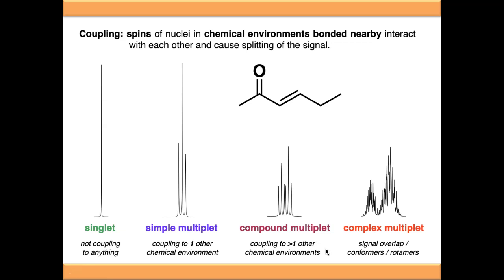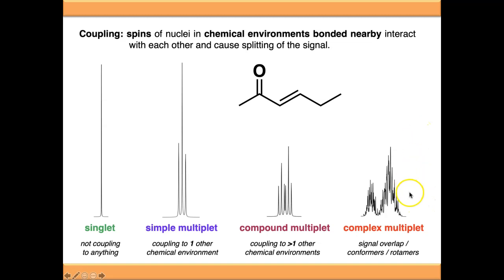Finally, we have complex multiplets. These may arise because you have an incredibly complex compound multiplet, or they might be caused by multiple signals overlapping with each other, or because your molecule is undergoing conformational changes on the NMR timescale. These are very difficult to interpret without complex computational methods, so we won't touch too heavily on these, but we'll go through each type either in this video or other videos in the series.